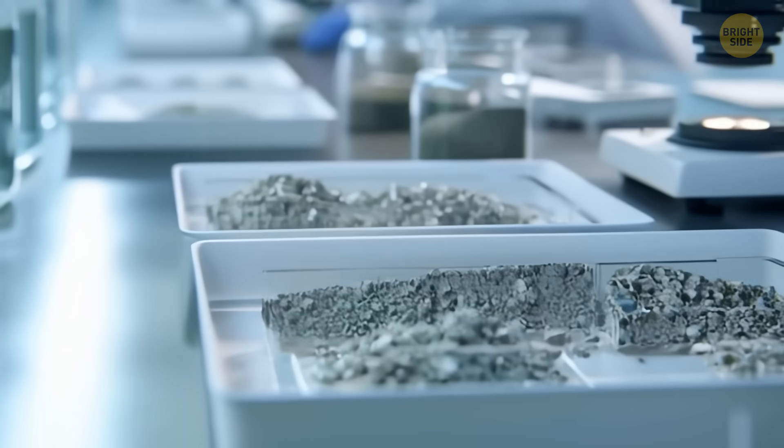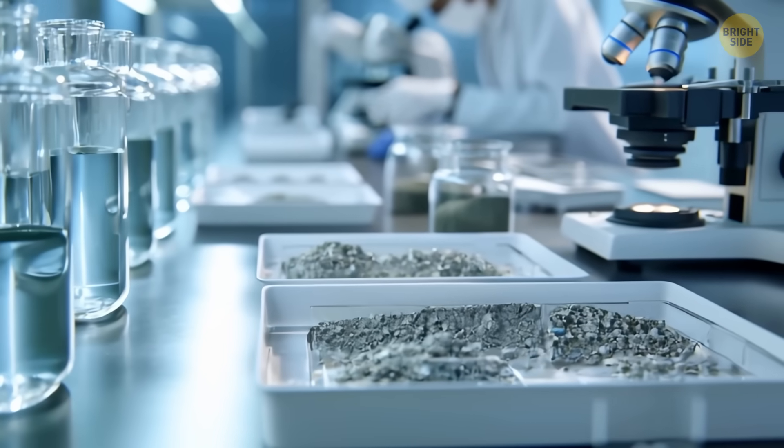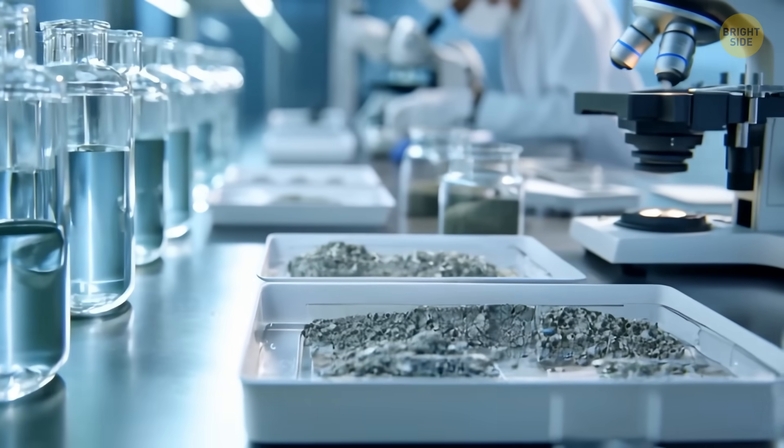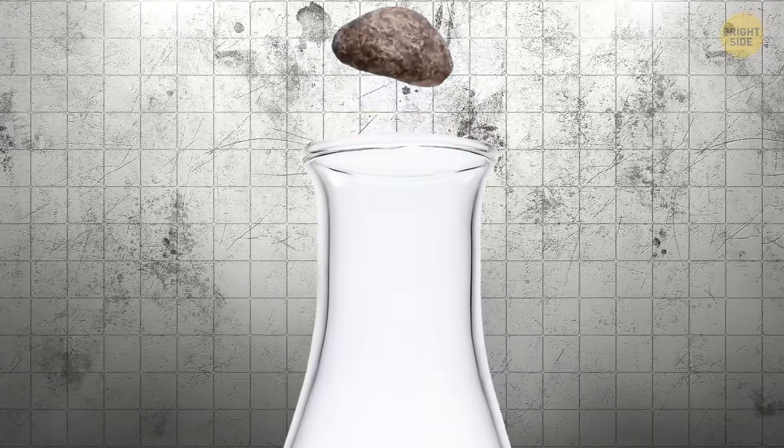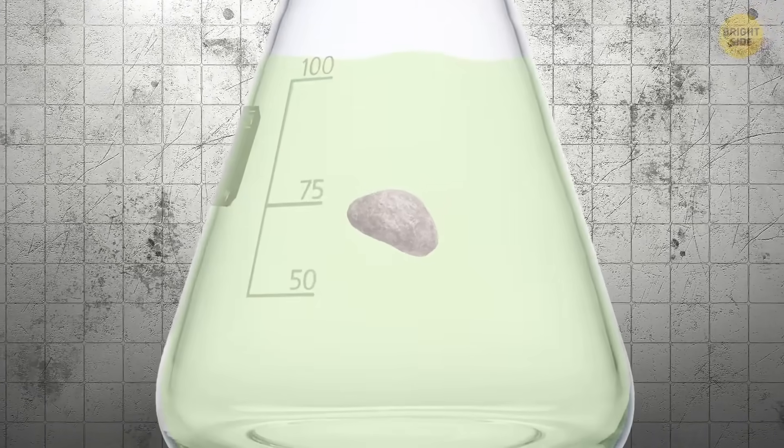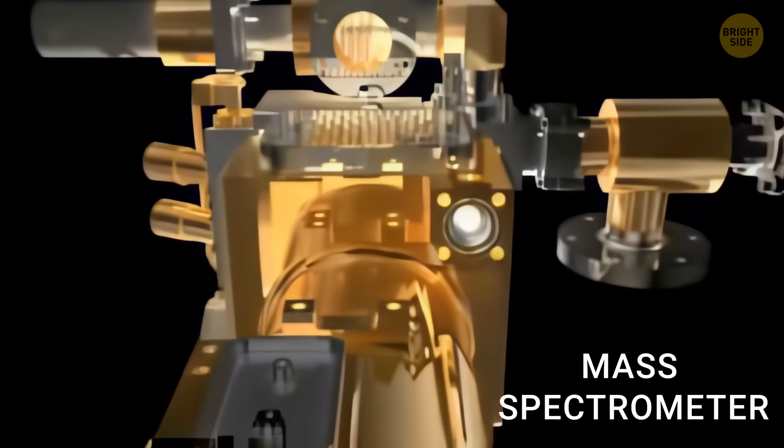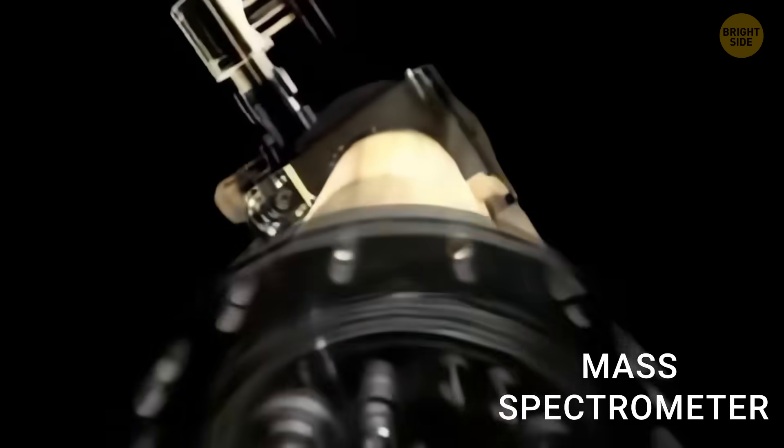Geologists take several rock samples. In a lab, they crush it to extract crystalline zircons. Geologists then dissolve the particles in acid to separate uranium from lead. Then, they use a special device. A mass spectrometer that accelerates atoms and sorts them by mass.